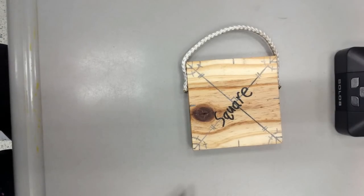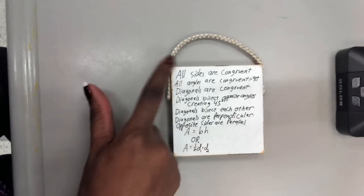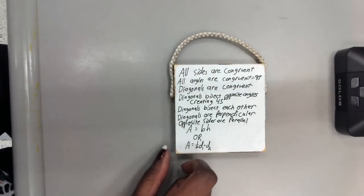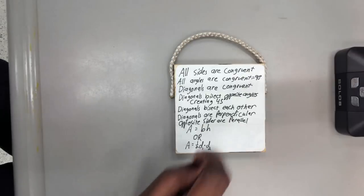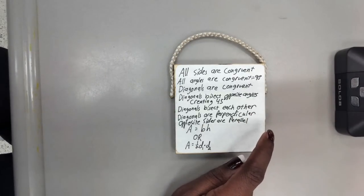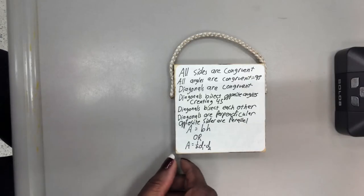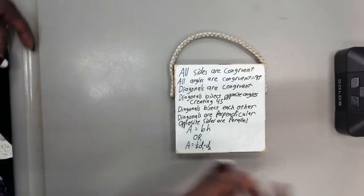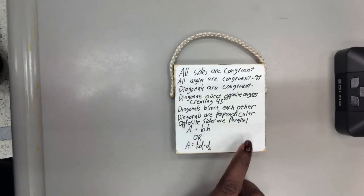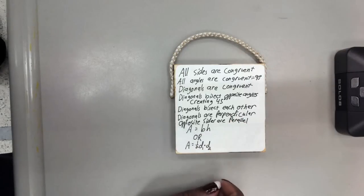The final shape is the square — the perfect shape. All sides are congruent, and all angles are congruent at 90 degrees. The diagonals of the square are congruent, the diagonals bisect the opposite angles creating 45-degree angles, the diagonals bisect each other, diagonals are perpendicular, and the opposite sides are parallel. To calculate the area you multiply base times height, or you can use one half times the first diagonal times the second diagonal.